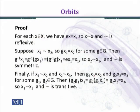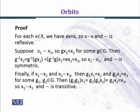Proof: We will establish three properties — reflexive, symmetric, and transitive. For each x belonging to X, we have e·x equal to x, where e is the identity element of G. When x is multiplied by e, the answer is x itself. Therefore x relates to x, and the relation is reflexive. So the first property is proved.